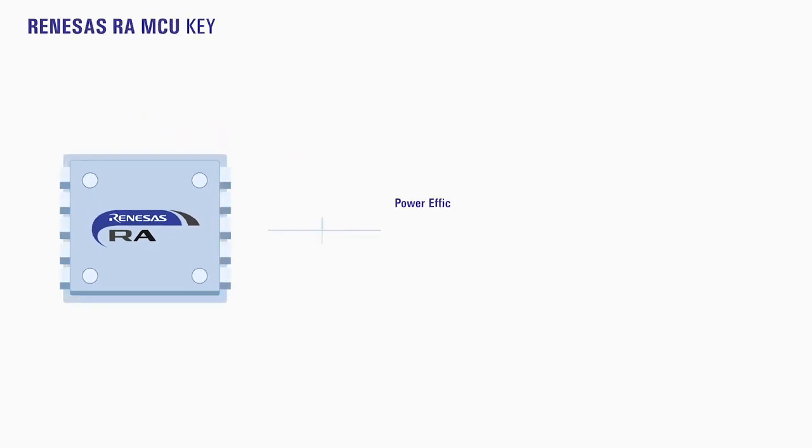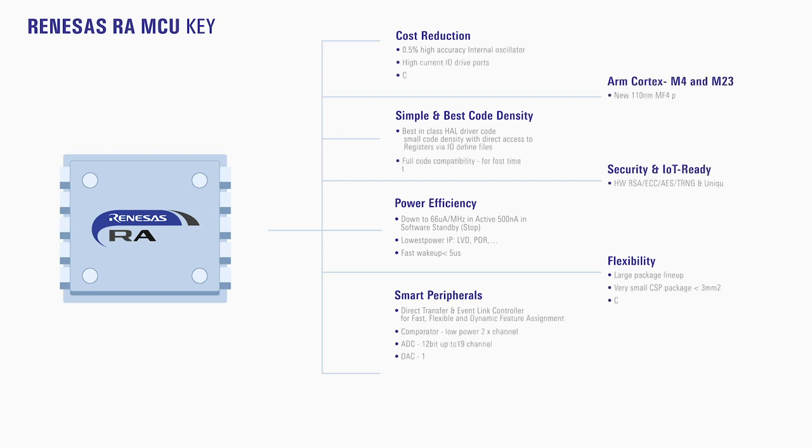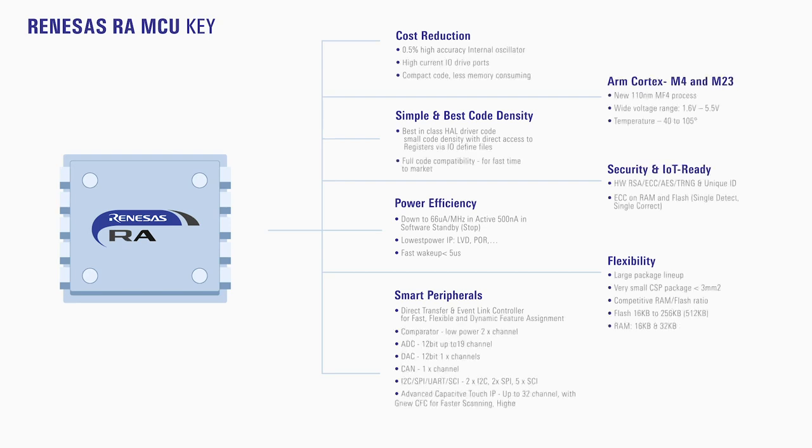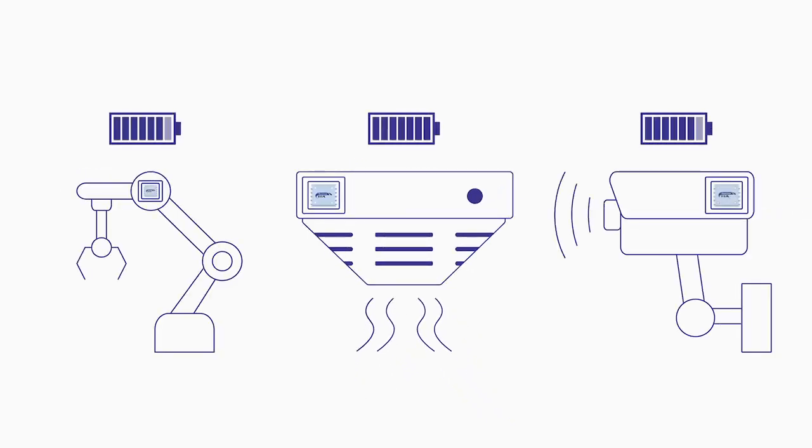MCU features like 0.5% high accuracy internal oscillators, data flash memory, and high current IO drive ports help simplify designs while also reducing bill of material cost. And fast 2 microsecond boot up time means your device is consuming less power over time, enabling much longer battery life.